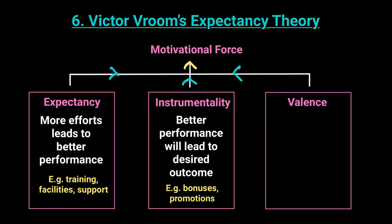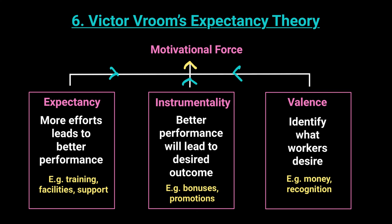A business cannot form this connection until they understand what drives an individual. We're all different - your friend is different from other people, I am different from you. We all have our own uniqueness, and everyone is driven by different things. Before assigning outcomes to better performance, you first need to understand for each individual worker what drives them, why are they here, what is the main motivator for them - and that's what valence is: identify what workers desire. Use emotional intelligence to gain an understanding of what your workers want.